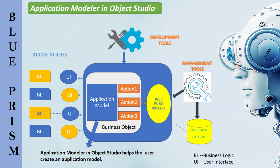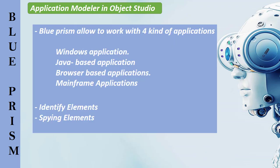The purpose of a business object is to integrate with an external application. In order to create an integration, we must first teach the business object about the application by creating an application model. The Application Modeler in Object Studio helps the user create an application model that exposes the elements of the application's user interface. Blue Prism allows you to work with four kinds of applications: Windows application, Java-based application, browser-based application, and mainframe application.